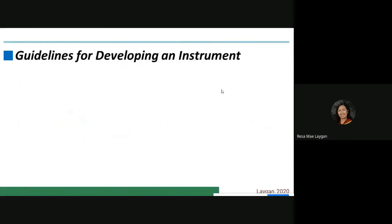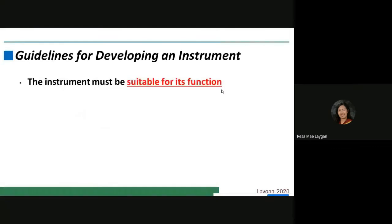These are the guidelines on how you will develop your research instrument. First, your instrument must be suitable for its function — it should be aligned with the main purpose of your research. If your instrument is not aligned with the purpose of your study or with the potential outcome, then you are just wasting your time making or using that instrument for data collection.